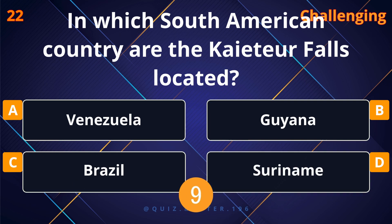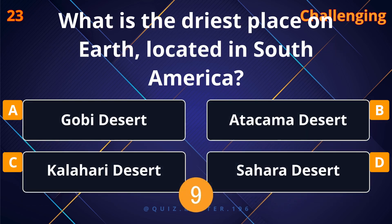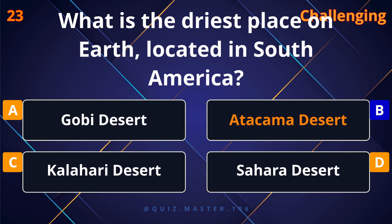In which South American country are the Kaieteur Falls located? Guyana. What is the driest place on Earth located in South America? The Atacama Desert.